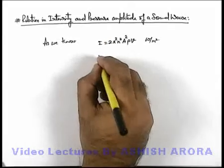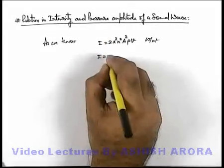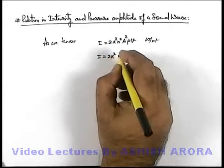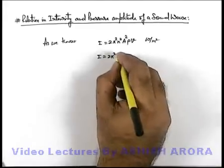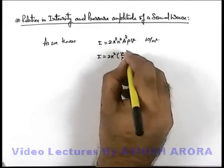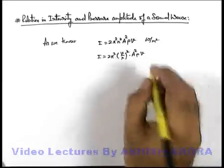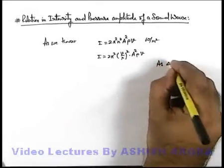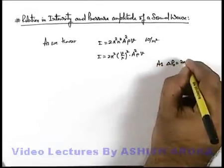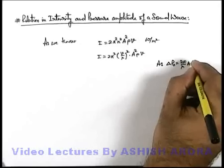Now in this expression we can rearrange some terms. We can write 2π² frequency squared as (v/λ)² into a²ρv. And as we have pressure amplitude, we can write as (2π/λ)aB.